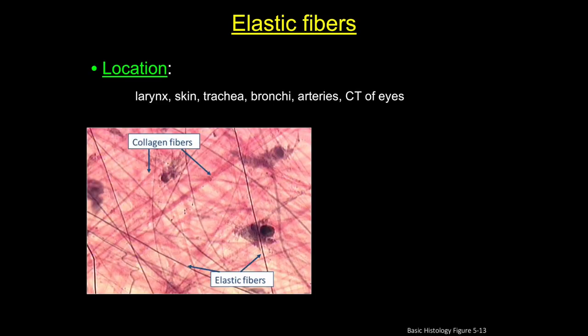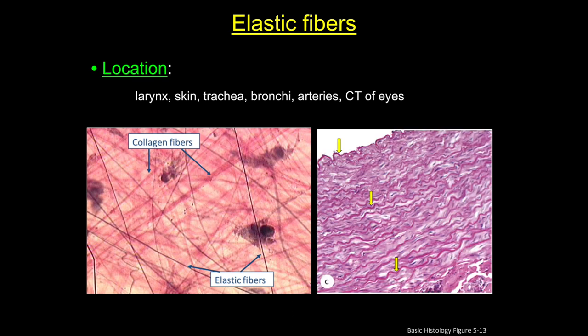Now let's move on and talk about elastic fibers, the second major type of fiber in connective tissue. Elastic fibers are much thinner than type 1 collagen fibers and form sparser networks interspersed with collagen bundles in many organs. In this micrograph, you can appreciate the difference between the two types, with collagen fibers shown as larger and thicker in red, and thinner elastic fibers in black. In this image of the aorta, dark-stained elastic fiber sheets run between the layers of arterial smooth muscle.